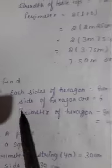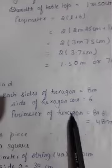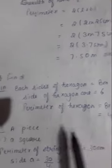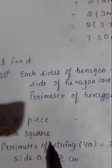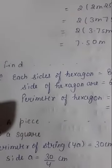Next, question number 8. Each side of hexagon is 8 meters. Sides of hexagon are 6. Perimeter of hexagon: 8 into 6 is 48 meters. Next, question number 11. A piece of string 30 centimeter long, what will be